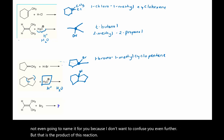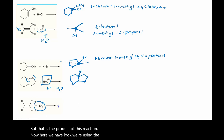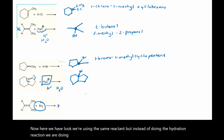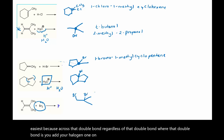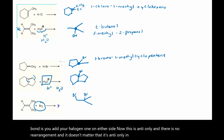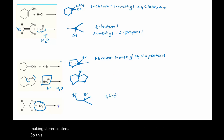Now down here, we have the same reactant, but instead of doing the hydration reaction, we are doing a halogenation reaction. Halogenation reactions are the easiest — across that double bond, regardless of where that double bond is, you add your halogen one on either side. This is anti-only and there is no rearrangement, and it doesn't matter that it's anti-only in this case because we are not making stereocenters. So this is called 1,2-dibromo-2-methylpropane.